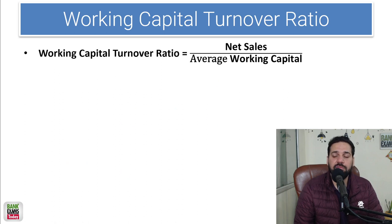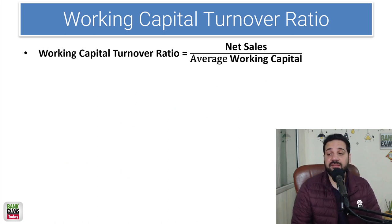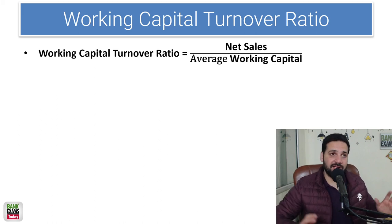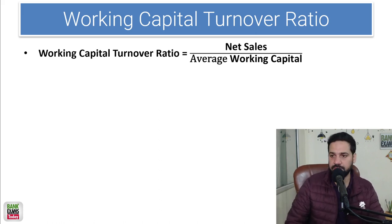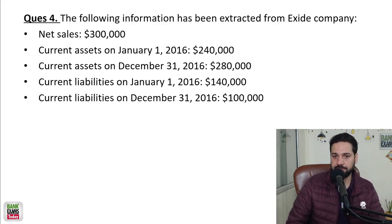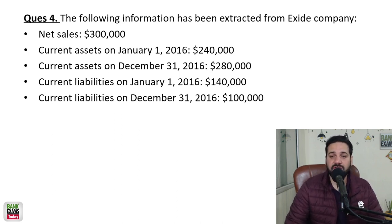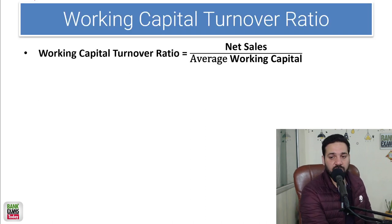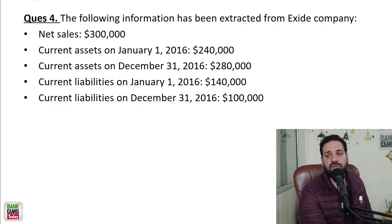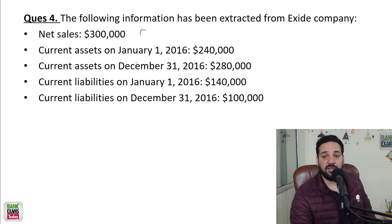The working capital turnover ratio is net sales divided by average working capital — how much working capital is needed to make sales. Net sales is 3,00,000. We are given current assets and current liabilities, so we need to find the average working capital.